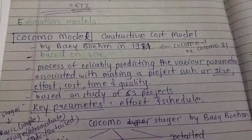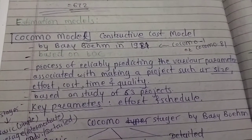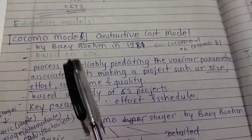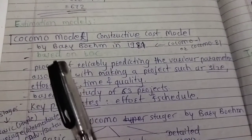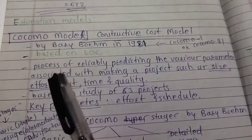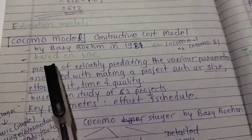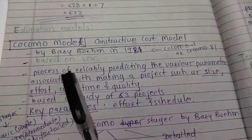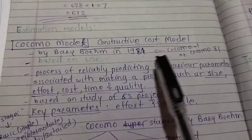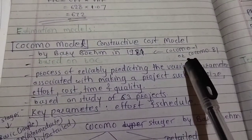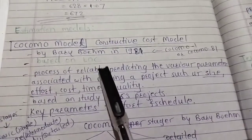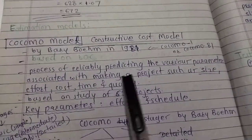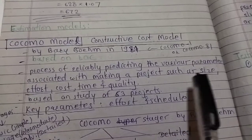We are going to continue with the next technique: estimation models. We have seen in the previous video what is estimation, what is scheduling, and what are the estimation techniques like LOC and function point count. Now we see the model of estimation — the COCOMO model. What is COCOMO? Constructive Cost Model, given by Barry Boehm in 1981, also called COCOMO 81 or COCOMO 1. It is based on the lines of code method and gives the process of reliably predicting various project parameters.